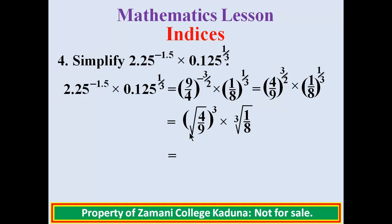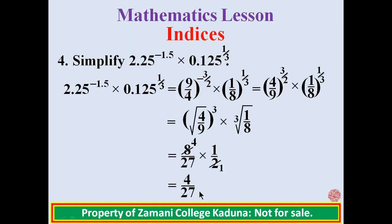So we now compute our answer. The square root of 4 is 2, and 2 raised to the power of 3 gives 8. The square root of 9 is 3, and 3 raised to the power of 3 is 27. So we have 8 over 27. The cube root of 1 is 1, and the cube root of 8 is 2, giving 1 over 2. Multiplying: 2 goes into 8 to give 4, so our final answer is 4 over 27.